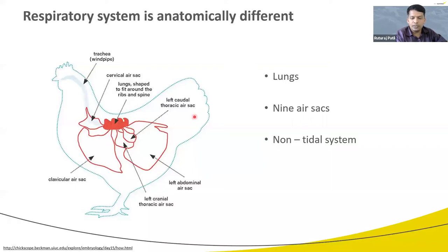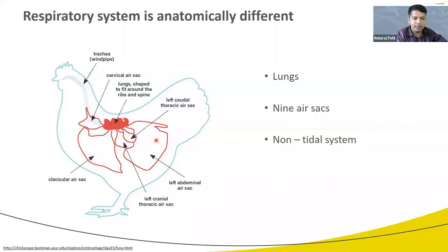In poultry, the respiratory system is also called a non-tidal system. In mammals, tidal volume represents the normal volume of air displaced between inhalation and exhalation without extra effort. But in birds, since the air sacs are involved in respiration, there is no specified lung volume for inhalation or exhalation. The separation of functions between lungs and air sacs allows continuous airflow through the lungs, as opposed to the tidal airflow in mammals. For this reason, birds are able to extract a higher percentage of oxygen from the air — important when flying at high altitude.